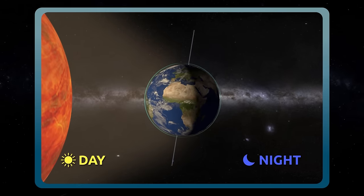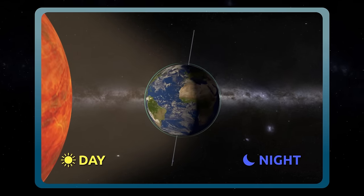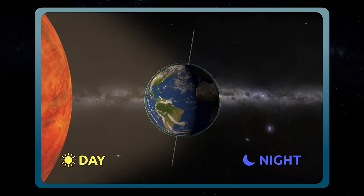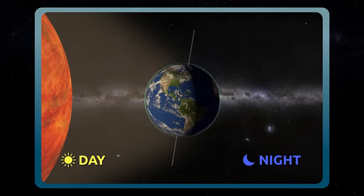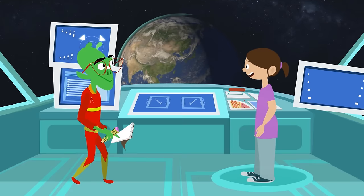Rotation explains day and night. As you can see, it's daytime in the part of the Earth that faces the Sun and nighttime on the dark side. Do you understand?